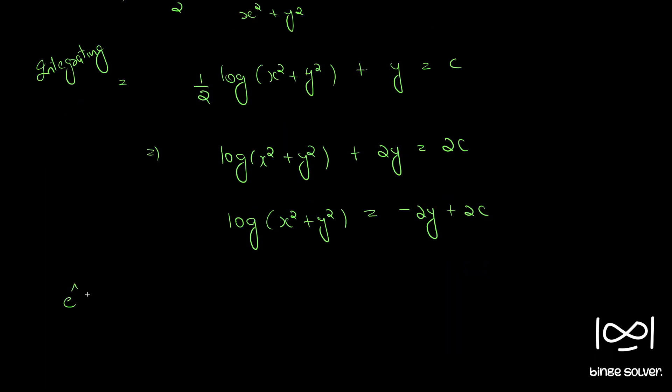So, if we take e to the power on both sides, we have x square plus y square is equal to e raise to minus 2y into e raise to 2c which is a constant.